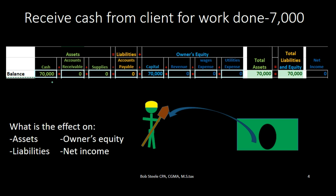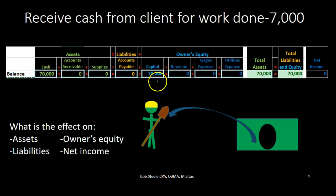We're going to have to start to memorize those assets, those liabilities, those equity. Assets include cash, accounts receivable, supplies. We've got liabilities including accounts payable. We've got owner's equity including capital, as well as the income statement including revenue and all the other expenses.